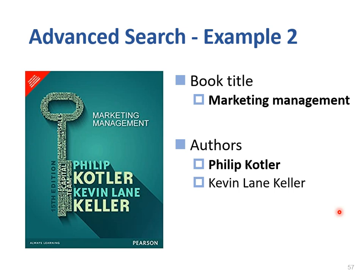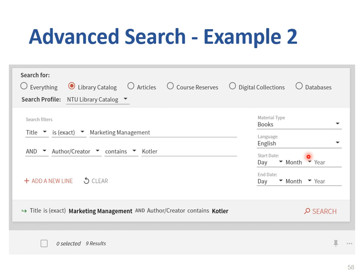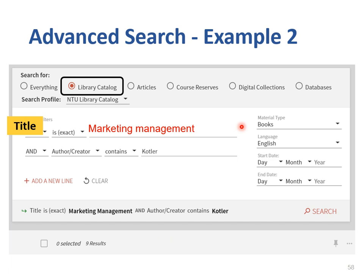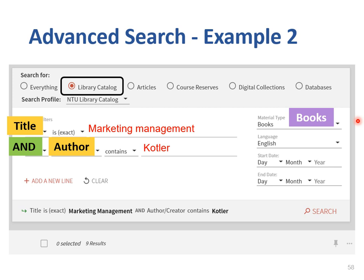Here is another example. I am looking for the book Marketing Management and one of the authors is Philip Kotler. To begin with, I am going to select Library Catalog since I want to know what is available in NTU library. Then I type Marketing Management on the first line and choose Title in the search field. On the second line, I select AND, choose Author in the search field, and type the author's last name: Kotler. On the right-hand side, under material type I select Books, and under Language I select English, because I don't want the Chinese translation. So this is a way to further limit your search.